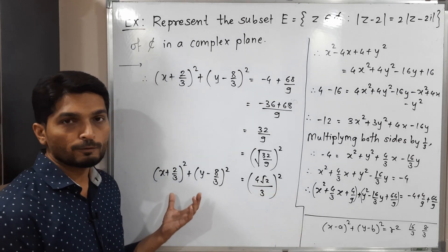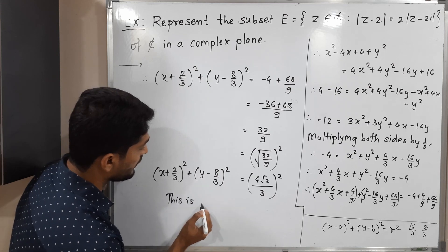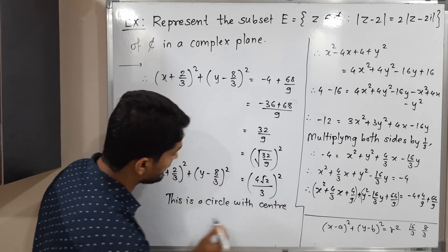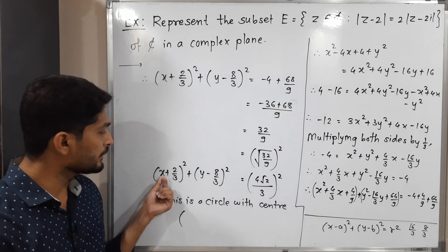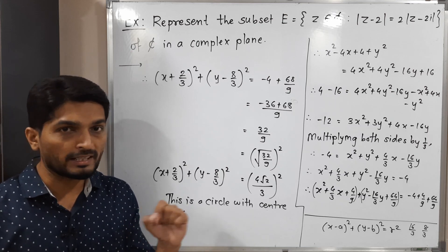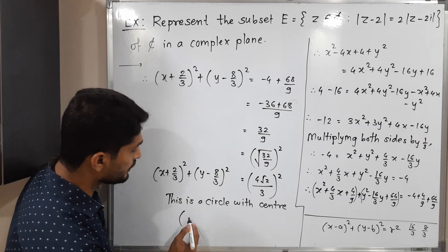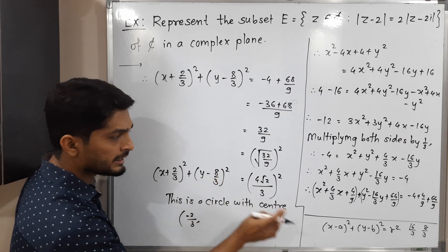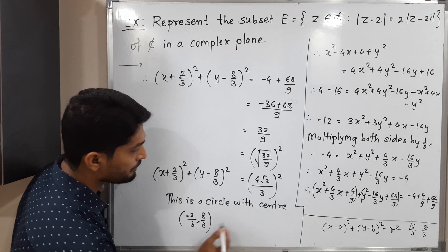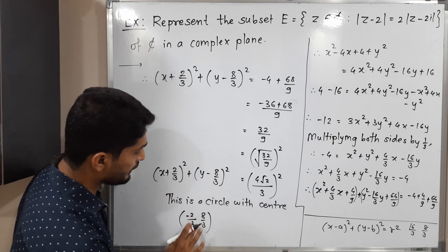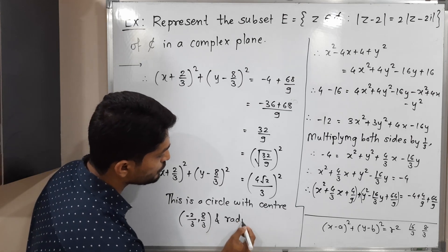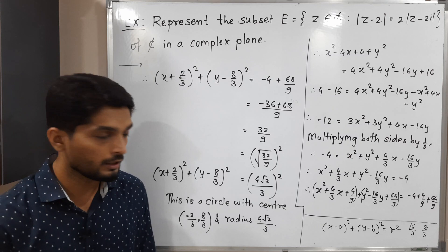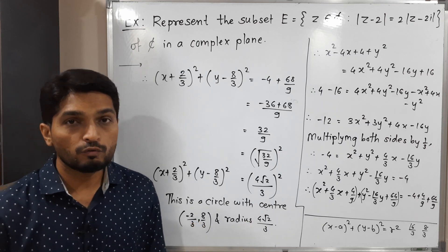Now we can easily compare with the standard form. This is the equation of a circle. Since we have X plus 2/3, we rewrite it as X minus (minus 2/3), so A equals minus 2/3. And Y minus 8/3 means B equals 8/3. So the center is (minus 2/3, 8/3) and the radius R is 4 root 2 by 3.